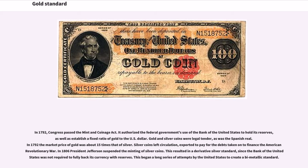In 1792, Congress passed the Mint and Coinage Act, authorizing the federal government's use of the Bank of the United States to hold its reserves, and establishing a fixed ratio of gold to the U.S. dollar. Gold and silver coins were legal tender, as was the Spanish real. In 1792 the market price of gold was about 15 times that of silver. Silver coins left circulation, exported to pay for debts from the American Revolutionary War. In 1806, President Jefferson suspended the minting of silver coins.